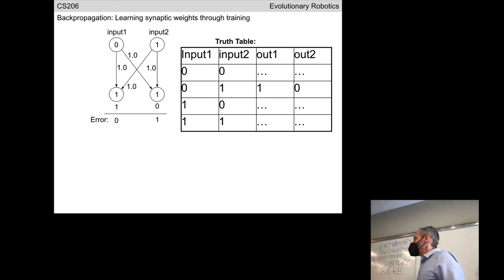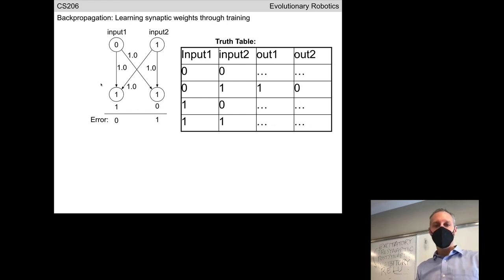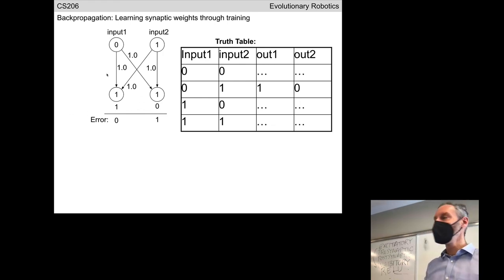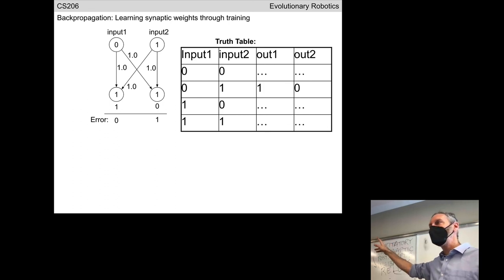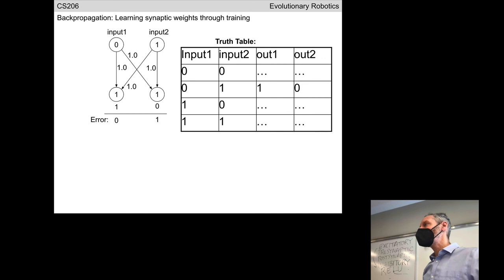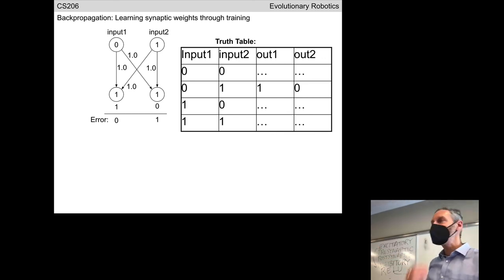So that's designing a neural network. What if the neural network doesn't do what we want it to do? Here's an example of a neural network where we have a truth table with two output values — for every pair of binary inputs there should be a corresponding pair of outputs that we want.